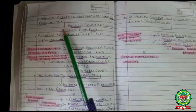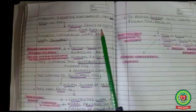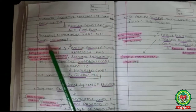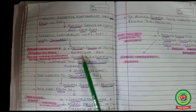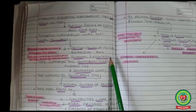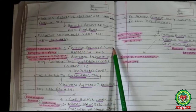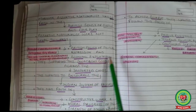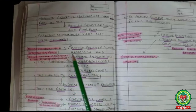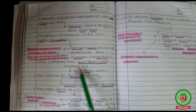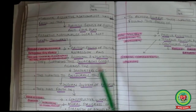Assertive nationalists had no faith in the British sense of justice and fair play. They were not loyal towards the British policy of political repression — meaning the act of controlling citizens by force — and economic exploitation, meaning taking unfair advantages in the field of production and consumption.